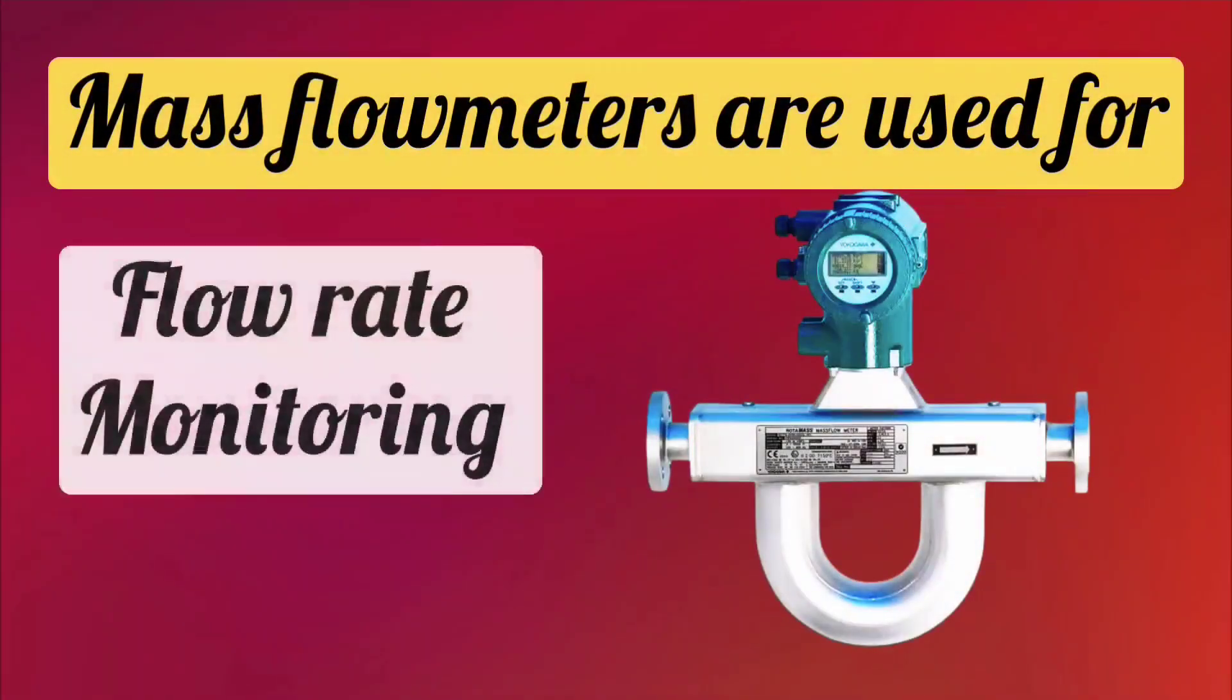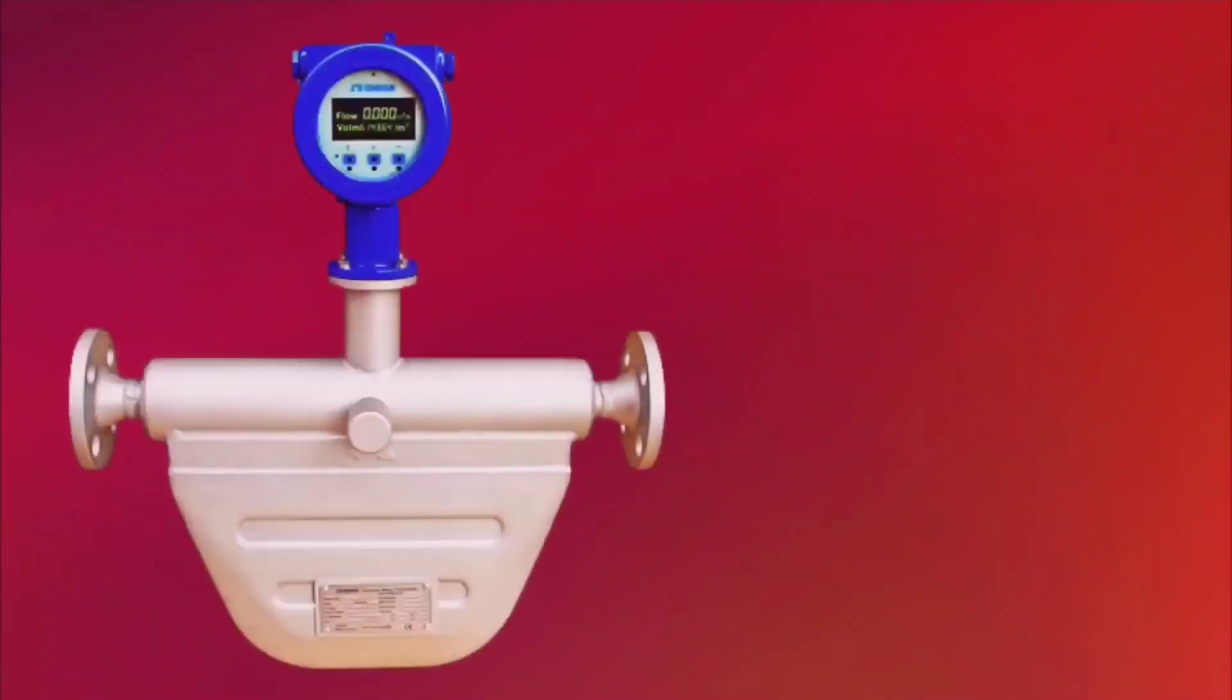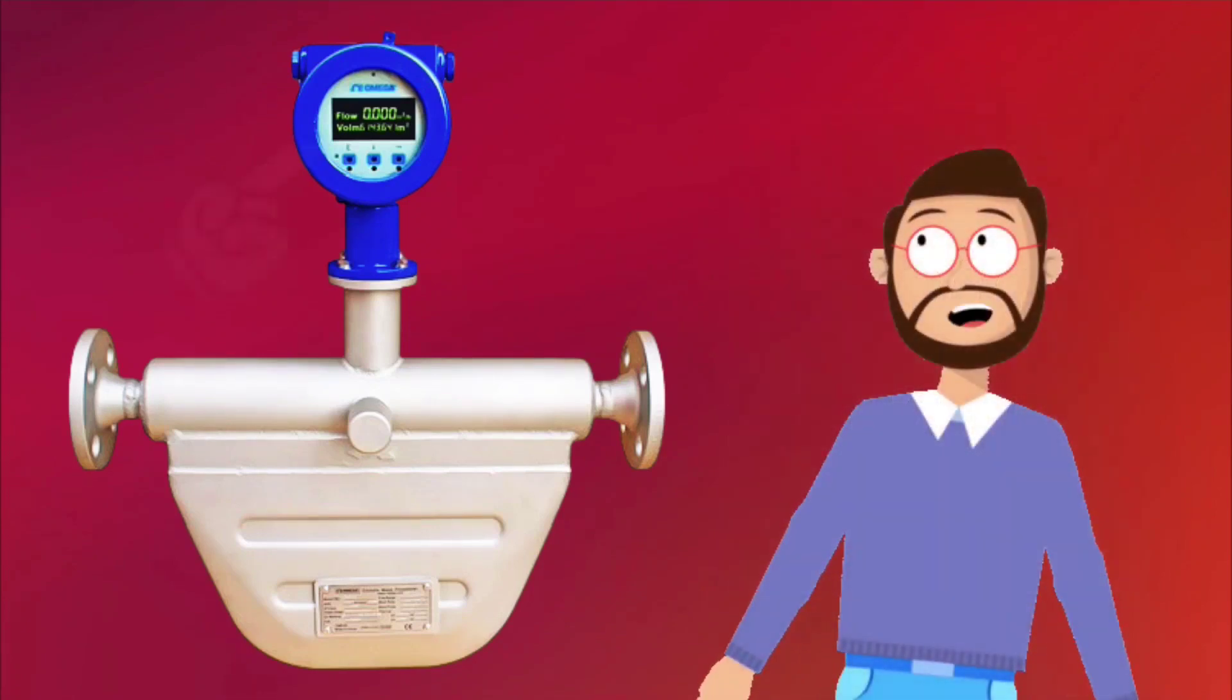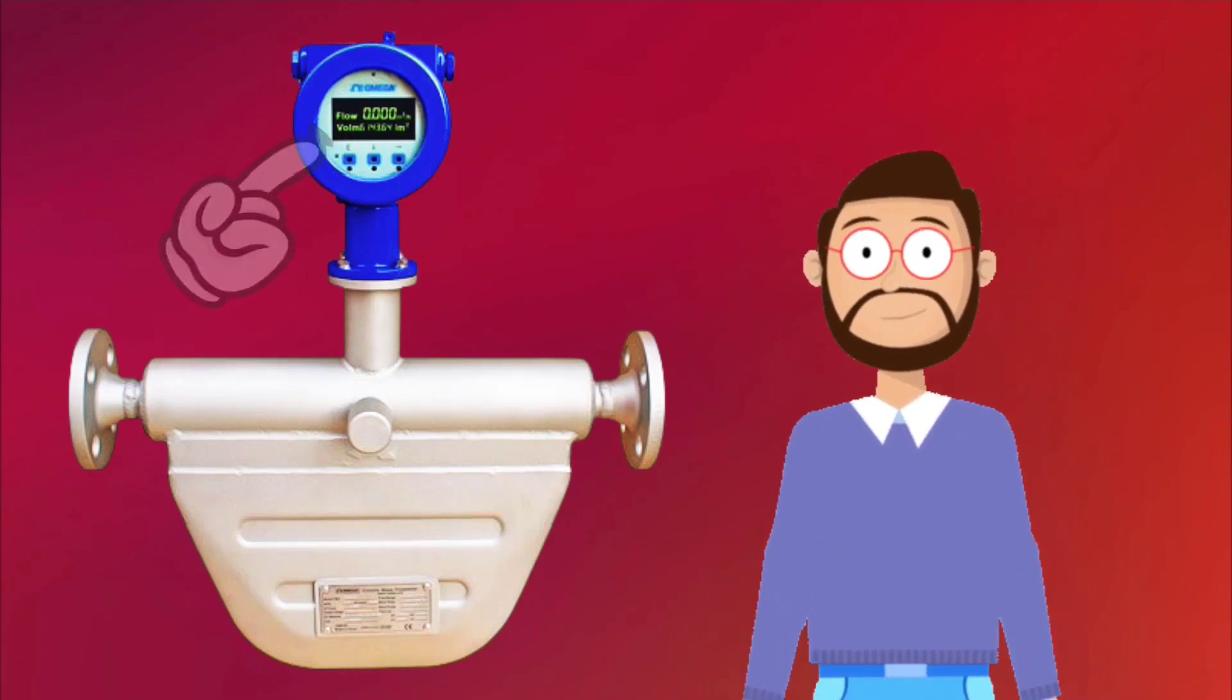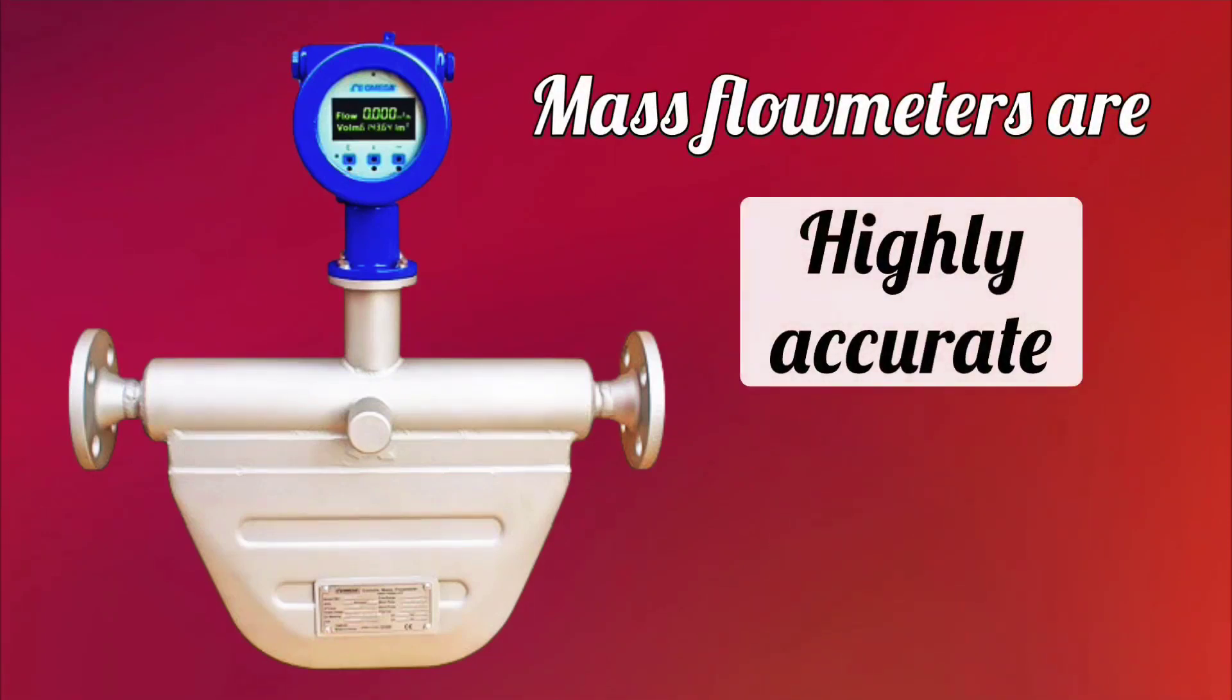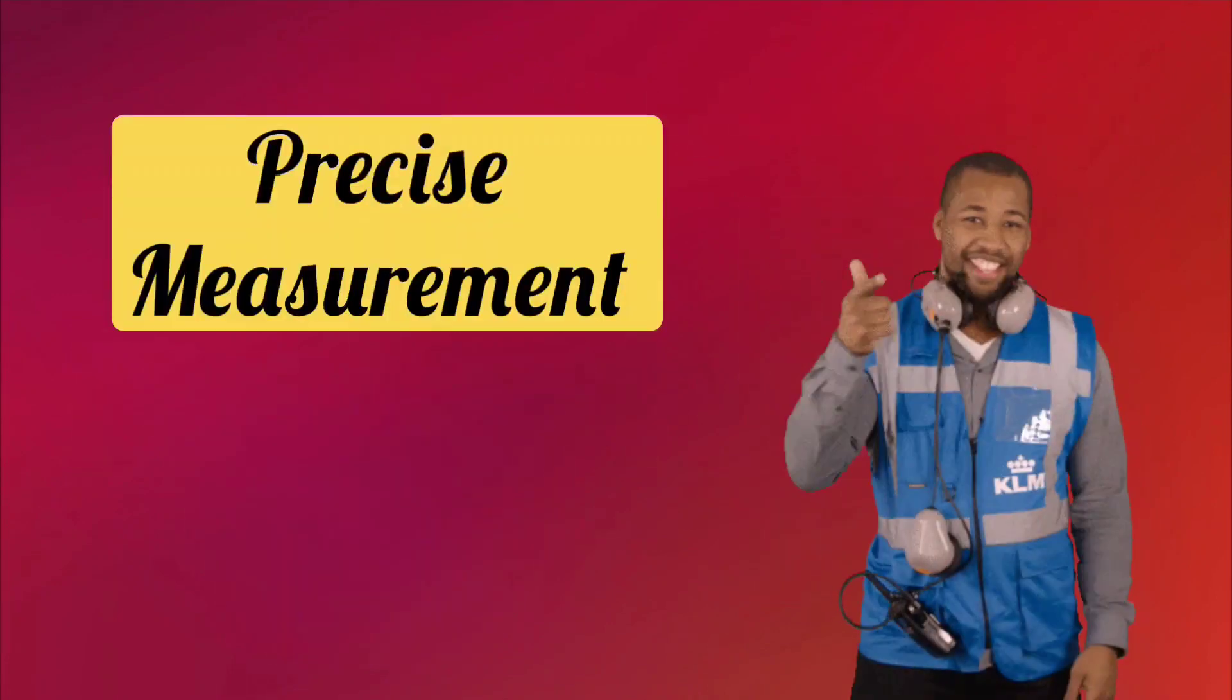Mass flow meters are used for flow rate monitoring and controlling. In mass flow meters, there is a display for monitoring the flow rate. On this display, you can see the flow measured by the mass flow meter. If we talk about their accuracy, then mass flow meters are highly accurate and reliable instruments which do precise measurement.